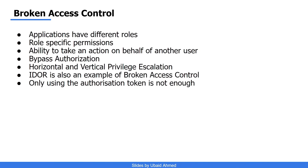You must have come across different applications offering various memberships — for example, Netflix and Hotstar offer different subscriptions. Based on the subscription, the features or content you are allowed to watch varies. Different access controls are implemented: a basic user can do certain things, a premium user can do what a basic user can plus additional things, and ultra premium users get even more benefits. Now, suppose one basic user can update the profile of another basic user — that's a breach in access control.